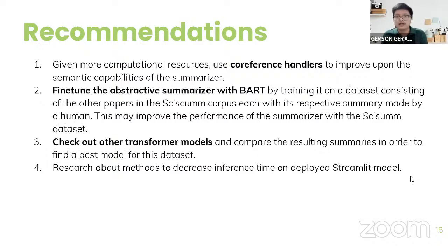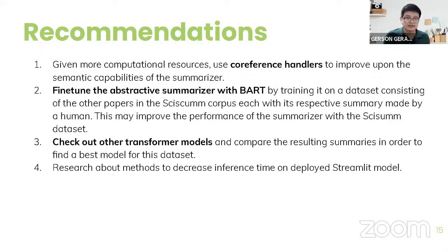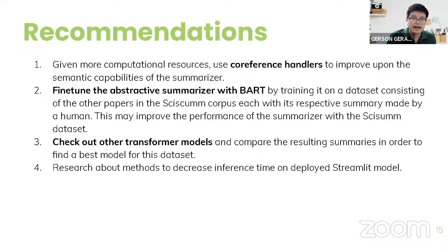This is especially useful in long articles where pronouns can denote proper nouns. But from my experience, co-reference resolution takes a lot of GPU resources, so I wasn't able to apply it in the capstone project. The second recommendation is to fine-tune the summarizer with BART by training it on a dataset consisting of the papers in the SISEM corpus, each with its own human-generated summary — this will update the weights so performance matches with the dataset.